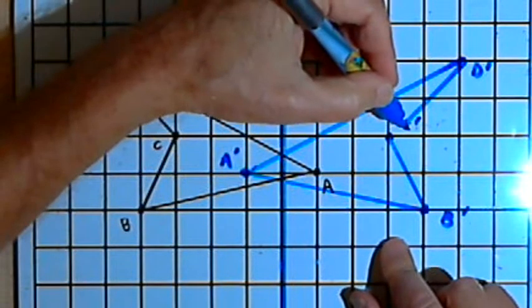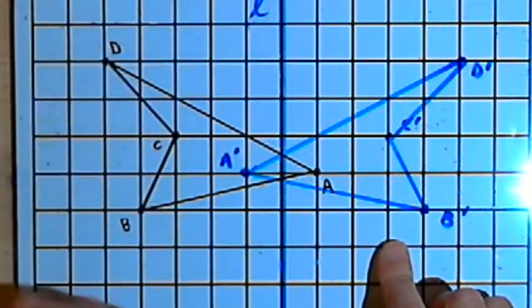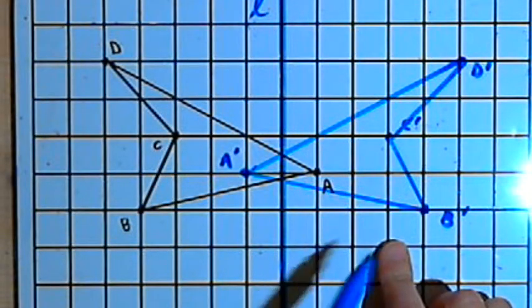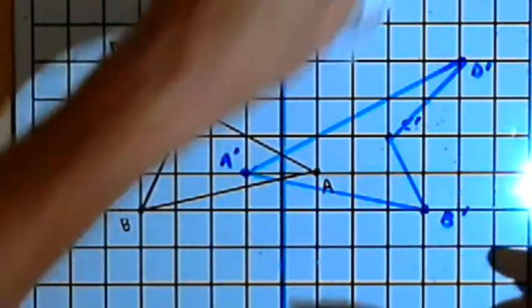And there I've got my original image, A, B, C, D, reflected across line L to create its mirror image, A prime, B prime, C prime, D prime.